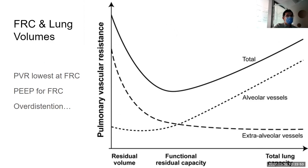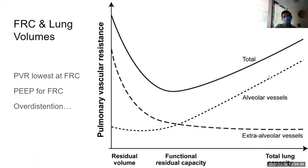It wouldn't be ICU without talking about ventilation. PVR total is lowest at FRC, whereas it increases as you move towards total lung capacity, but also as you exhale more and have more atelectasis. That means you should try to ventilate someone near FRC — trying to avoid really large tidal volumes, using lung-protective lower driving pressures, away from total lung capacity, and also avoiding exhaling all the way down into atelectatic territory for PVR management.